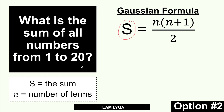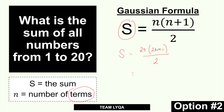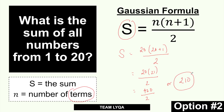So filling in the formula: S = 20 × (20 + 1) / 2. Following PEMDAS, solve inside the parentheses first: 20 + 1 = 21. So S = 20 × 21 / 2. 20 × 21 = 420. Then 420 / 2 = 210. So the answer is 210.